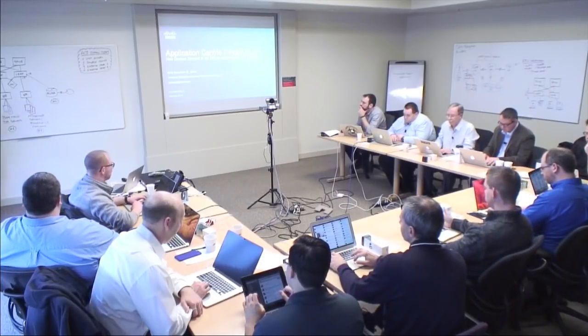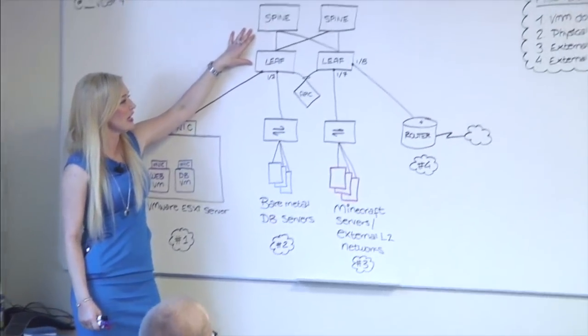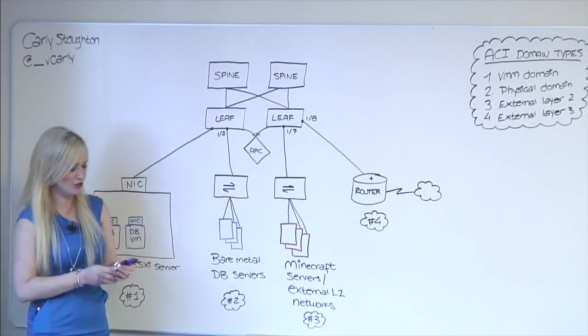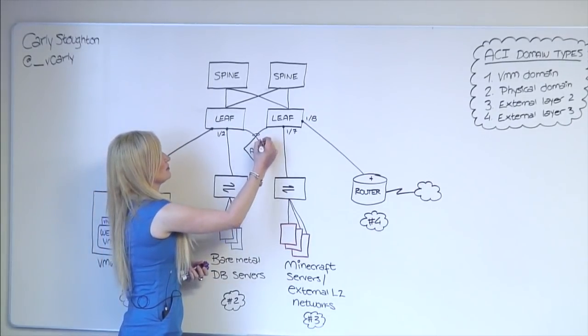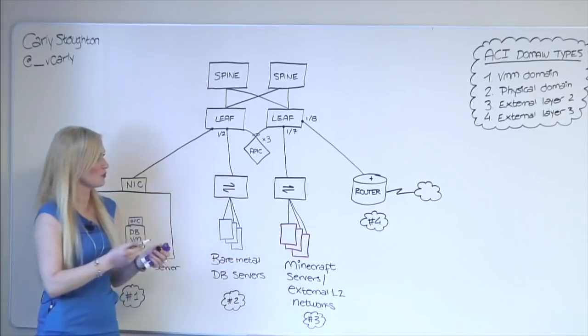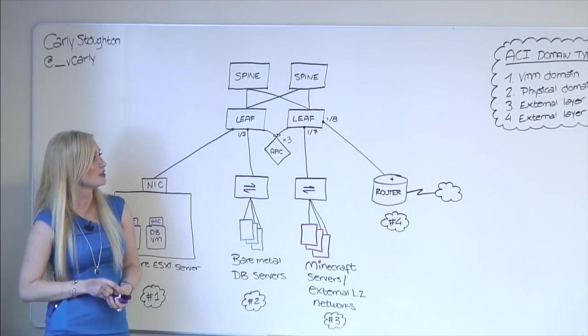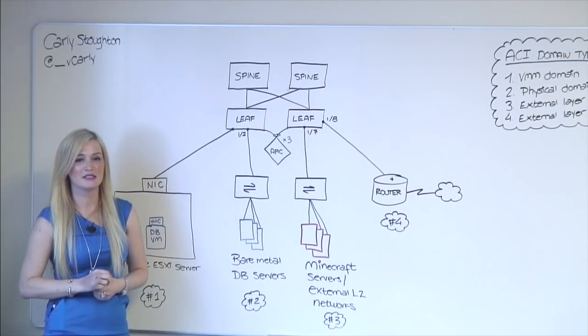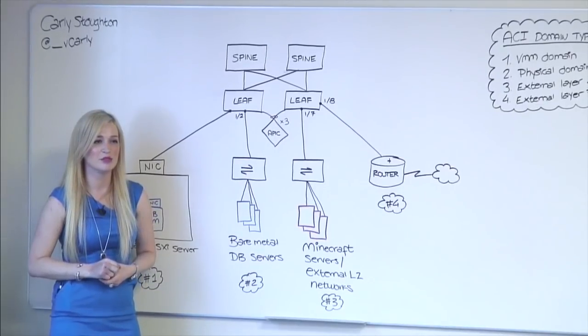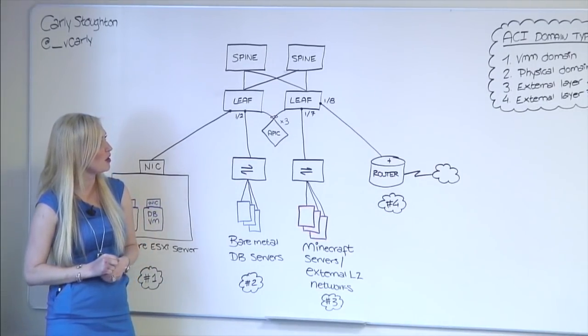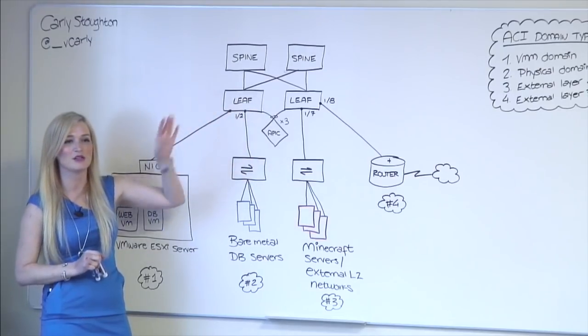All right, so what we're going to start with, I have my spine leaf topology. I have my controllers again, which is a cluster of three. All devices are connected to the leaves. Leaves only connect to spines. Leaves don't connect to each other. Spines don't connect to each other. I have my standard spine leaf topology, predictable latency, every device three hops away from one another across the fabric.